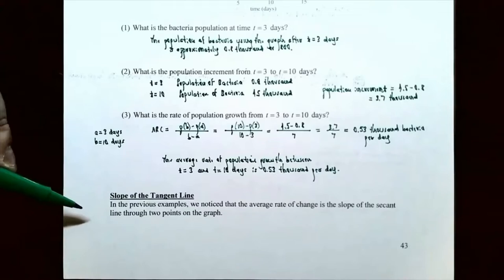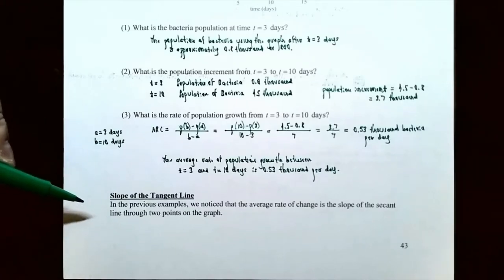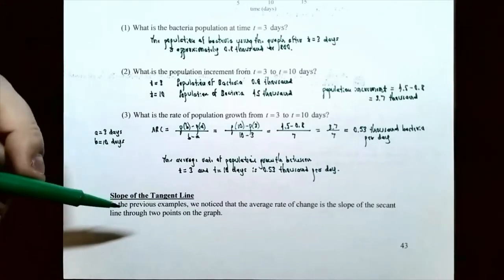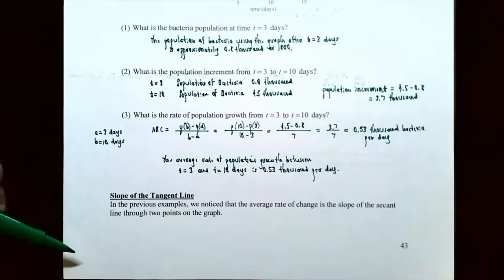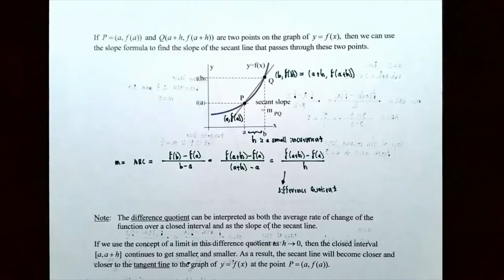We want to talk about what's called the slope of the tangent line and how it's related with the derivative. In the previous few examples, we talked about the average rate of change and how it connects with the slope of the secant line that connects two points on the graph of a curve. Now we're going to talk about what's called the tangent line and how it relates with the slope of a curve at one point. We're going to use the idea of how to calculate the slope of a secant line and use the limit process to find the slope of a tangent line.